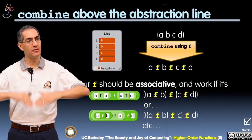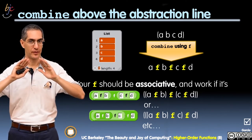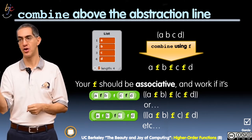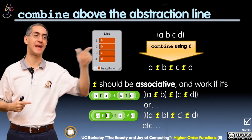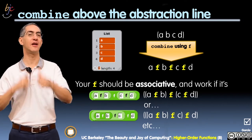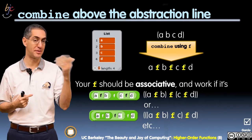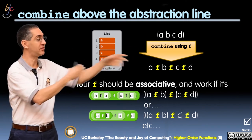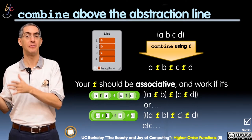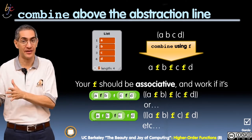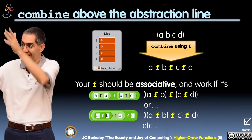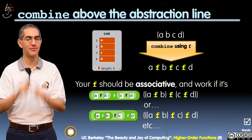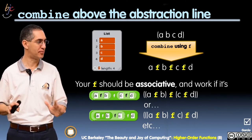This is important: even though I revealed how COMBINE works internally, you're not supposed to build your function and expectations based on that implementation. Why? Because our earlier version of the software, called BYOB, was left-associative — it did A and B first, then that and C, then that and D. The current SNAP is right-associative. So you're not supposed to know or rely on how COMBINE works internally.